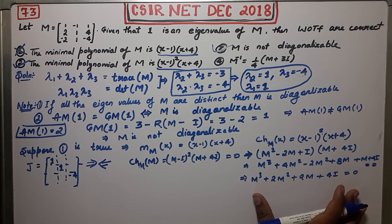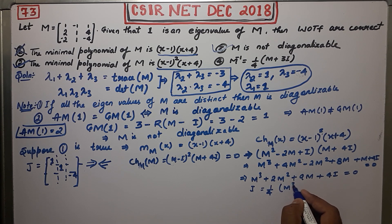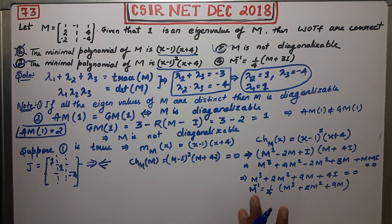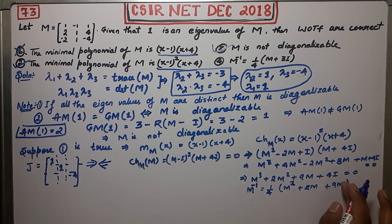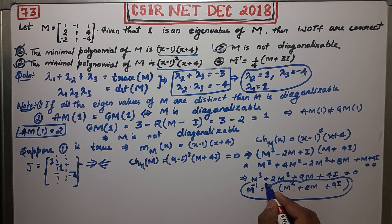I'm providing the method — verify the arithmetic yourself. Rearranging, isolate 4I on one side, then divide by 4 to get I equals (1/4)(M cubed plus 2M squared plus 9M) — adjust signs as per correct calculation. Then operate M inverse on both sides: M inverse equals (1/4)(M squared plus 2M plus 9I), using the method shown.